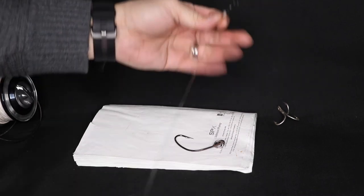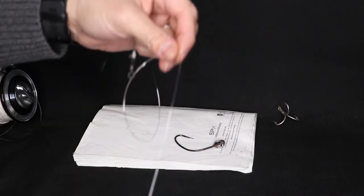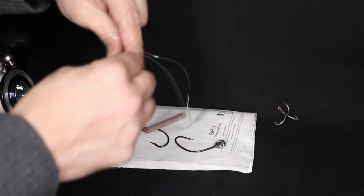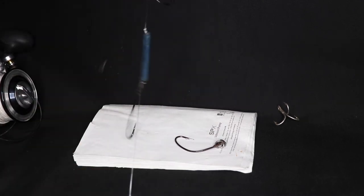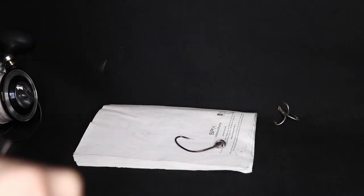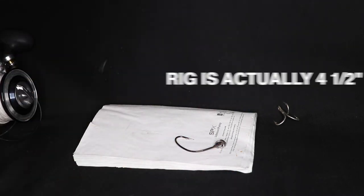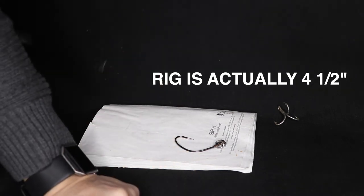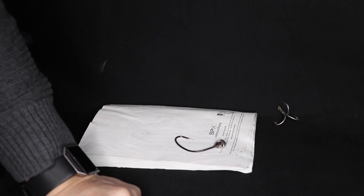There you have it. Barrel swivel, hook one, hook two, to my sinker. Rig as a whole is probably, you know, three to four, three and a half feet long, which is plenty on the big cod jigging sticks that we're using.